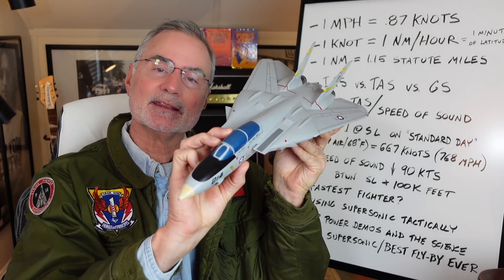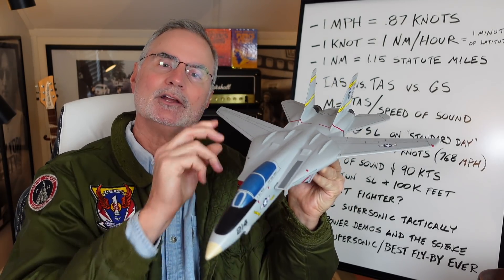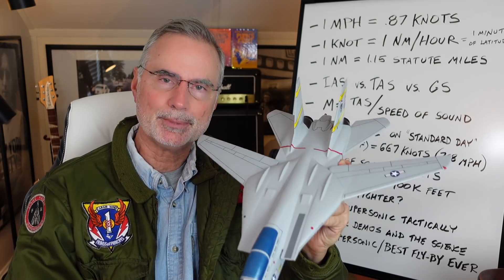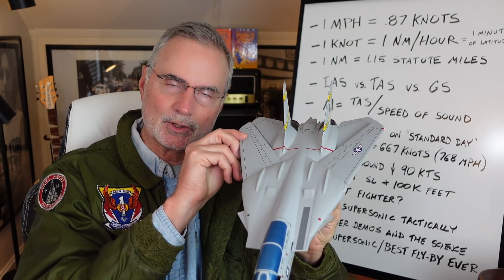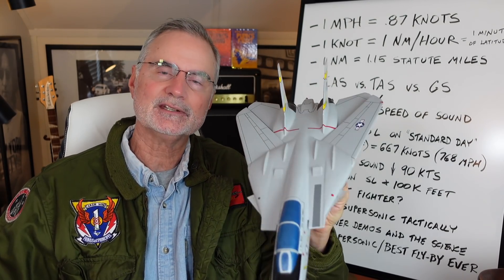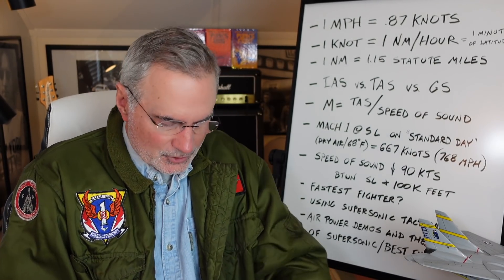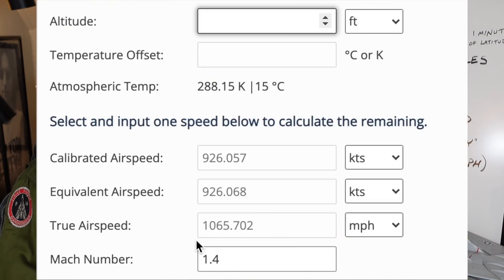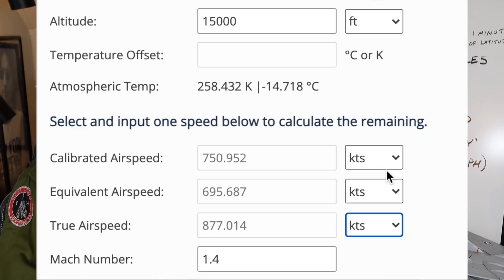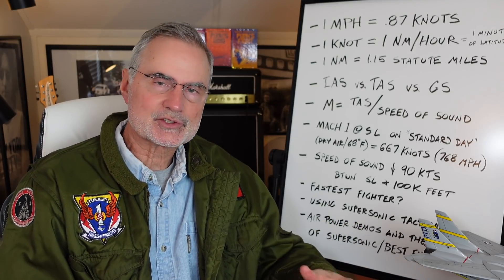You have to be very judicious about your use of afterburner. Also, when you're going supersonic, the airplane does not turn very well — so if you're planning on shooting somebody down in the visual arena, you can't be going supersonic. But when the time comes to bug out, light the burners, unweight to half a G, head downhill, and get going. By the time we get to 15,000 feet we're at Mach 1.4 — that's 751 knots indicated, or 877 knots true airspeed. The Tomcat is certainly capable of that kind of speed.